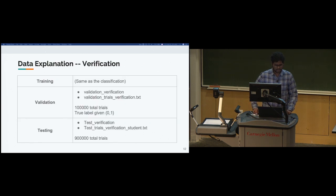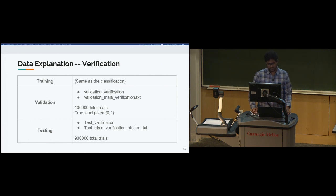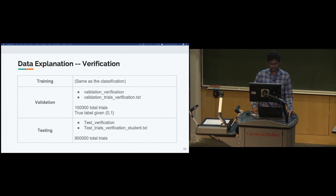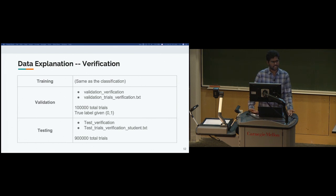For the verification task, the training data is the same, but for validation and test you have a validation underscore verification folder with face IDs as subfolders. Along with this data, you're given a trial file called validation_trials_verification.txt. The trial file contains pairs of face IDs with a true label — zero means the pair is not the same person, one means it is. You can use this to validate your verification model.